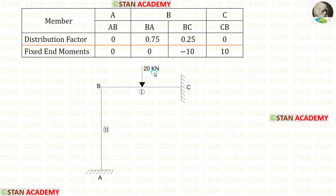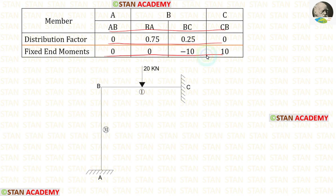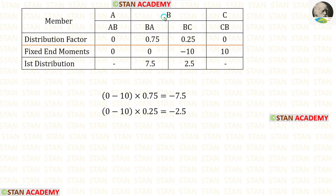Now let us start making the moment distribution table. In the table, we first enter all the members, then the distribution factors, and then the fixed end moments. For the first distribution at joint B, we add the two fixed end moments and multiply by the distribution factors. The result gives negative values, which we enter as positive inside the table.